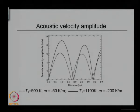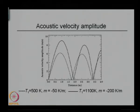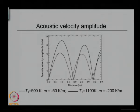The profile was T-naught plus M times X, so M is the temperature gradient, dT-bar over dX. The two curves shown are for two different temperature profiles — one has increasing temperature and another decreasing.